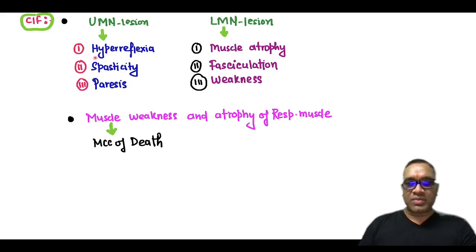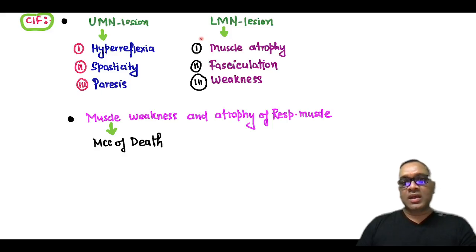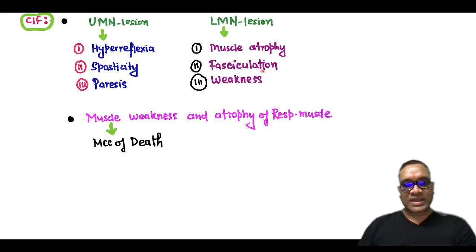Upper motor neuron lesion will be shown by hyperreflexia, spasticity, and paresis. Lower motor neuron lesion will be shown by muscle atrophy, fasciculations, and weakness.